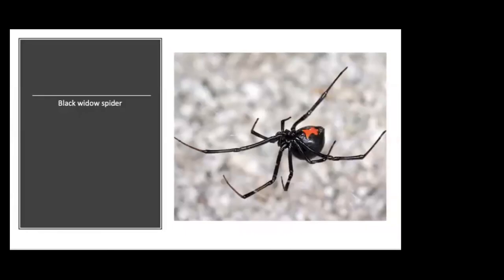Black widow spider. Moving on from insects to spiders and mites — the black widow spider does not affect grapevines, but its bite is poisonous to humans and therefore can affect people that work in the vineyard. Spiders are predators and generally considered beneficial, but black widows specifically in the vineyard are considered a pest due to the negative impact on human health. Black widow spiders are active at night and like to hide in dark, sheltered places. They are often found in the cartons that protect newly planted vines, so extra precautions should be taken when removing those cartons.